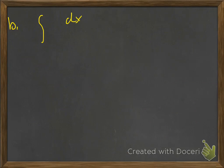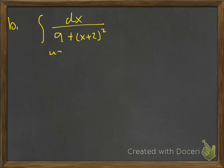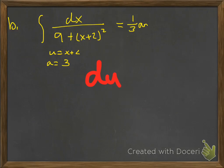Let's look at another one. We have dx over 9 plus (x+2)². This one is going to look like the arc tangent. I'll identify what u and a are to see if it fits arc tan. The u would be x+2, and a would be 3. And in fact this is an arc tan, with du equal to dx.